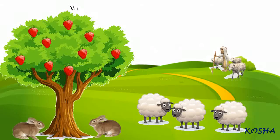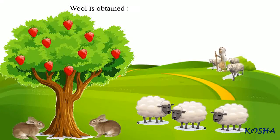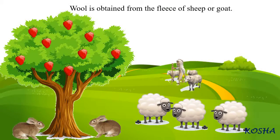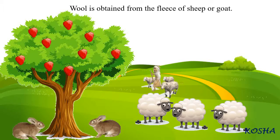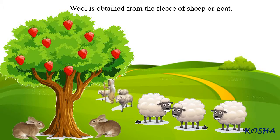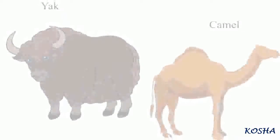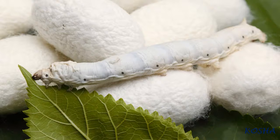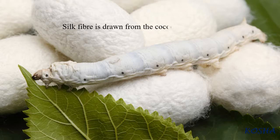Wool is obtained from the fleece of sheep or goat. It is also obtained from the hair of rabbits, yak, and camels. Silk fiber is drawn from the cocoon of silkworm.